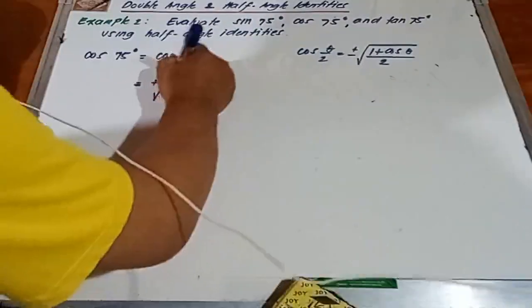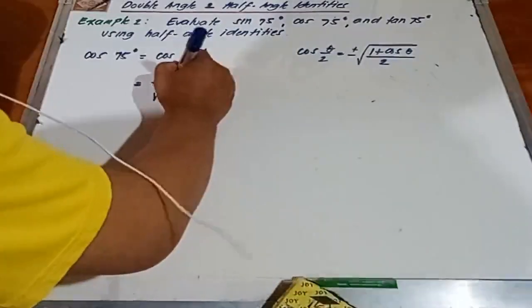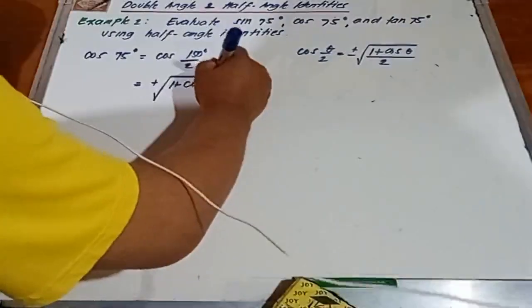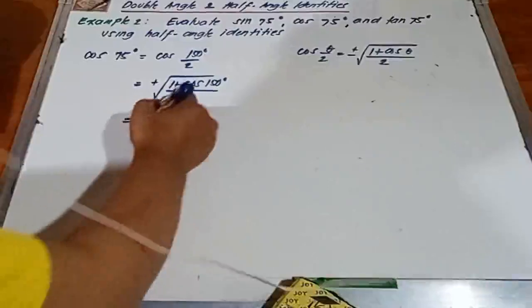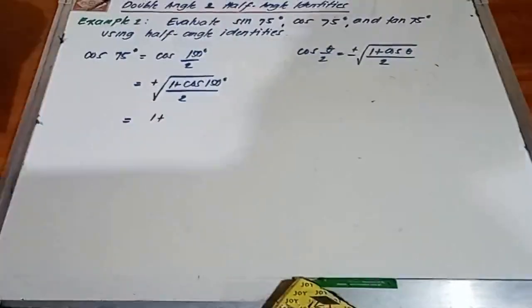Positive root: 1 plus cosine 150 degrees over 2. Next, so we have 1 plus, ang reference angle niya is 30 degrees.